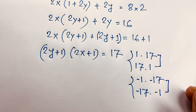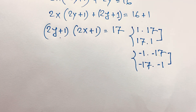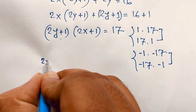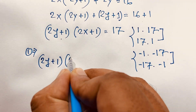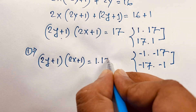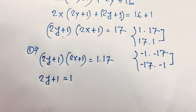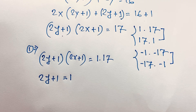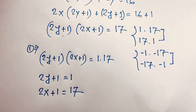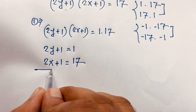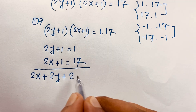But x and y are positive integers. Now you can see easily, for our first case: (2y plus 1) times (2x plus 1) equals 1 times 17. So 2y plus 1 is equal to 1, and 2x plus 1 is equal to 17. Then if I add both, we will find out 2x plus 2y, and 1 plus 1 will be 2, is equal to 18.